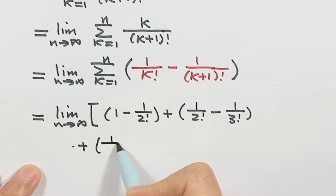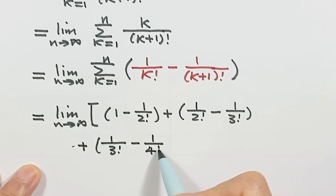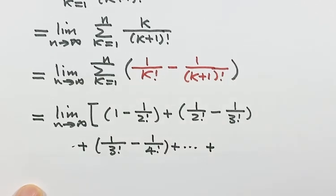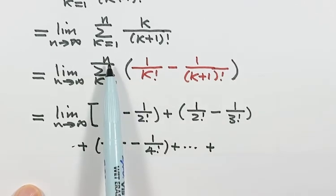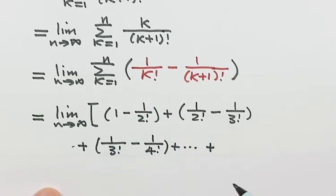Then the next one, here's 3 factorial, here 4 factorial. Then keep going until the last term. The last term, that's the case n. So here's n, here's n plus 1, so then this is the last term.